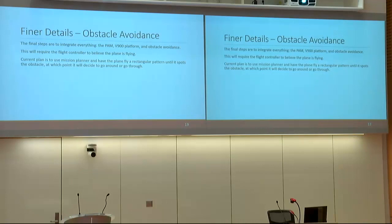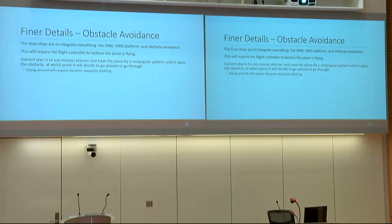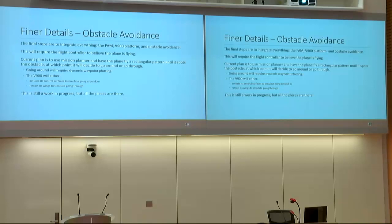The last steps are to implement everything together: the pneumatic actuated muscle, the V900, and the obstacle avoidance detection algorithms. One key requirement is making the airplane believe it's flying when it's not, which will be done using Mission Planner — the airplane will believe it's flying a rectangular pattern until it spots the obstacle, at which point it follows the obstacle avoidance algorithm. This will require dynamic waypoint plotting and is still a work in progress, but the pieces are all there and coming together.